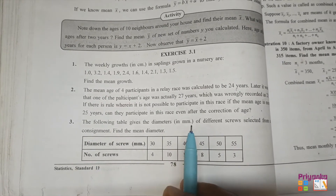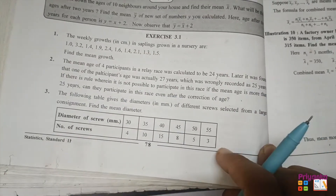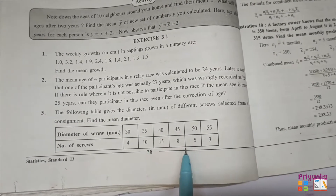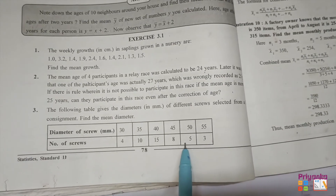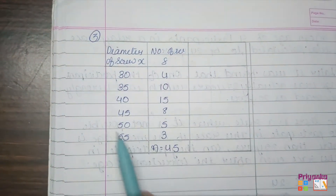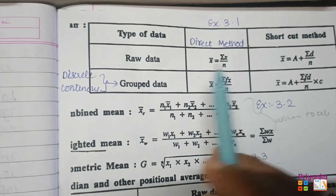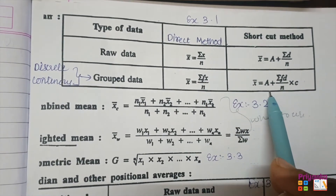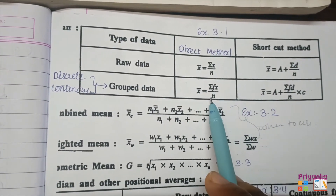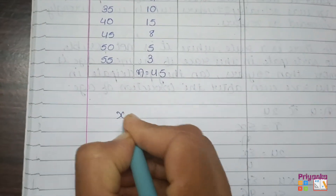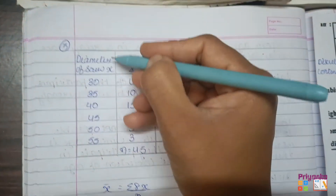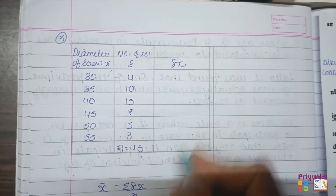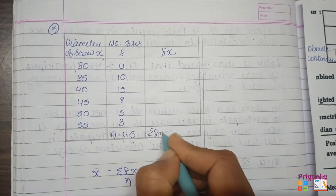Question 3: The following table gives the diameter in millimeters of different screws selected from a large consignment. Find the mean diameter. Here the value of x is given with frequency, so this type of information is known as discrete data. For group data — both discrete and continuous — the formula for mean is x̄ = Σfx / n. We will first use the direct method. The column of diameter is x and the number of screws is the frequency f.